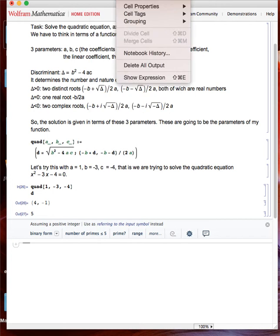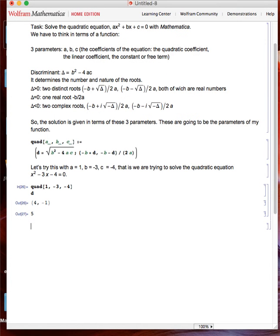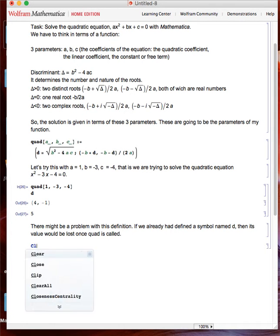But there might be a problem with this definition of the function. What is the problem? The problem is that if we already had defined a symbol named d, its value would be lost once quad is called.